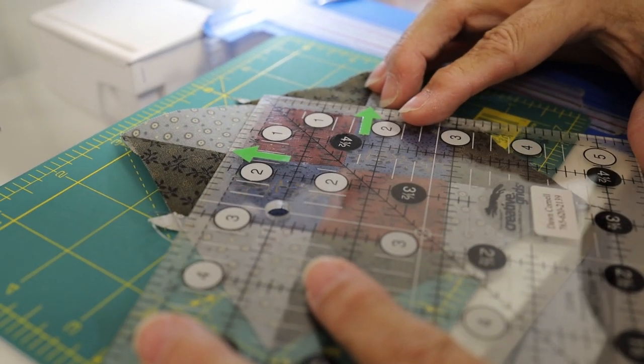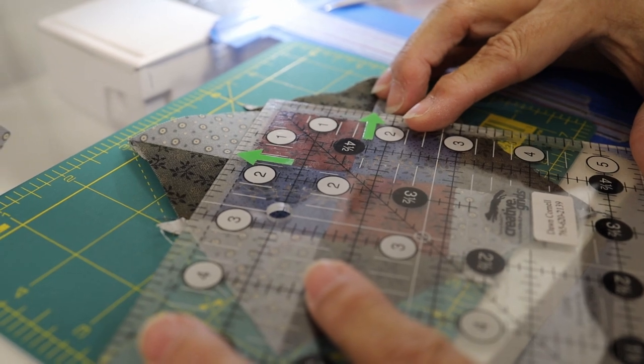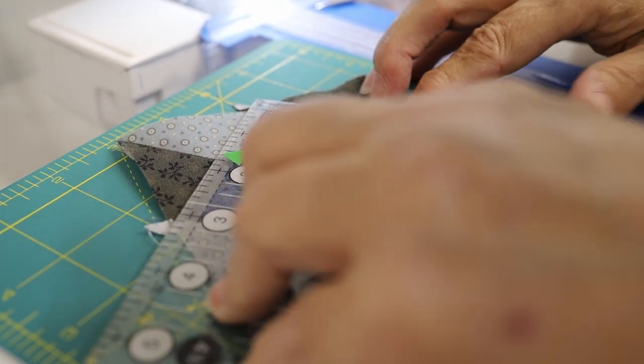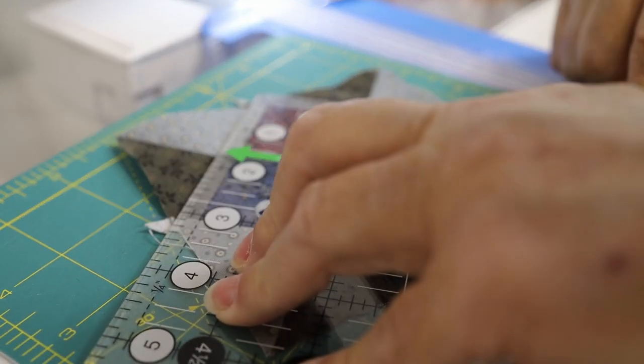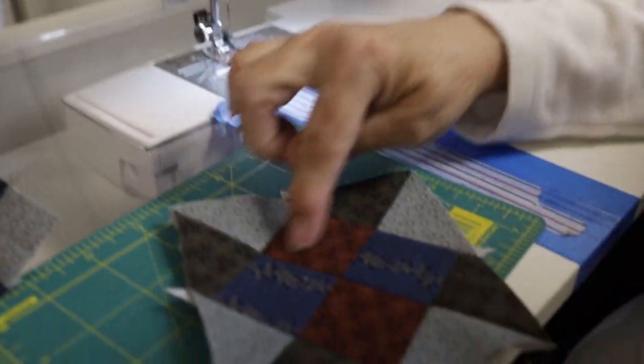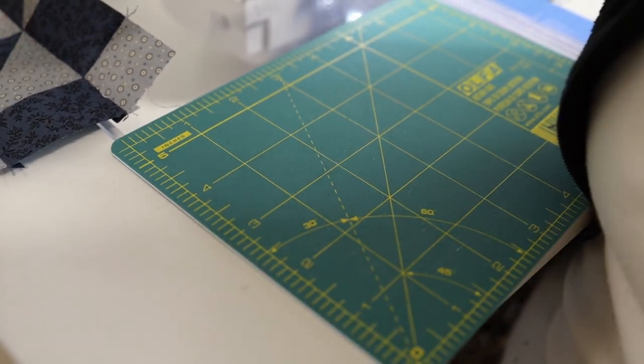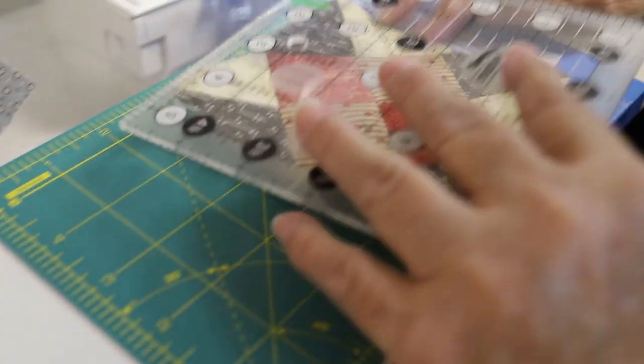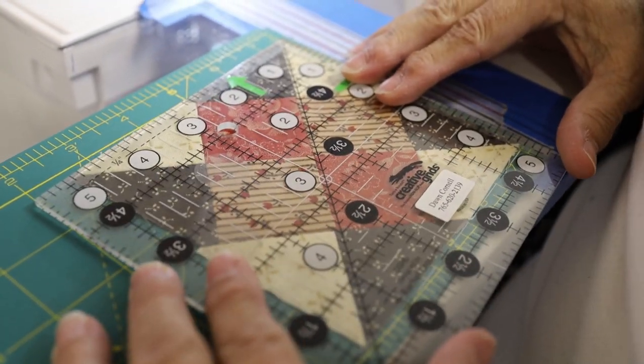And then when I laid my rulers on the lines, they lined right up and I could square it up. So then you turn it around. And you're talking about, just to be clear, you're talking about the center 4 patch. I'm talking about this 4 patch that I didn't do. I didn't do it here.